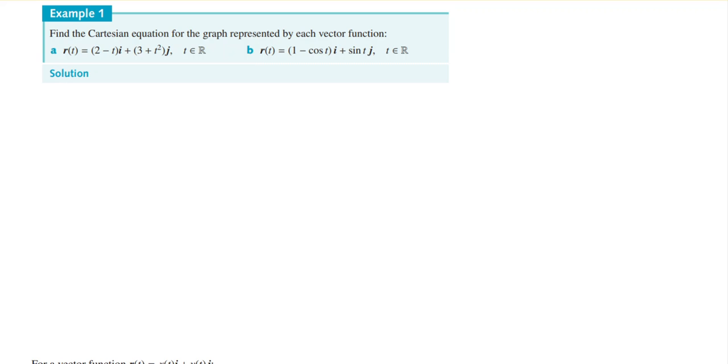Example 1. Find the Cartesian equation for the graph represented by each of the following vectors. Part a. r(t) equals (2 - t)i plus (3 + t²)j.